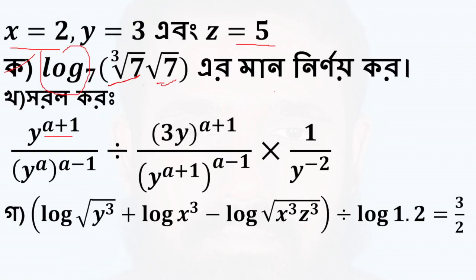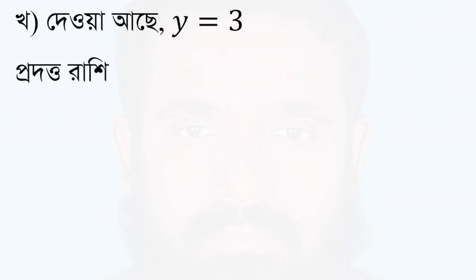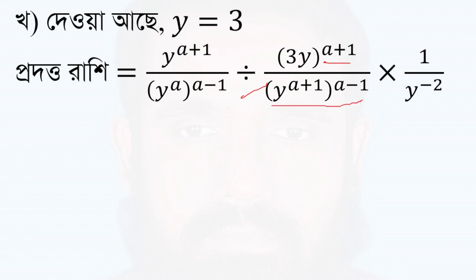Y to the power a plus 1 by Y to the power a into a minus 1. So Y to the power a plus 1, Y to the power a plus 1 to the power a minus 1 into 1 by Y inverse 2. So Y inverse 2, this will be conquerable. We are going to get Y to the power a plus 1 by Y to the power a, plus 1 by Y to the power a plus 1 by Y to the power a plus 2.